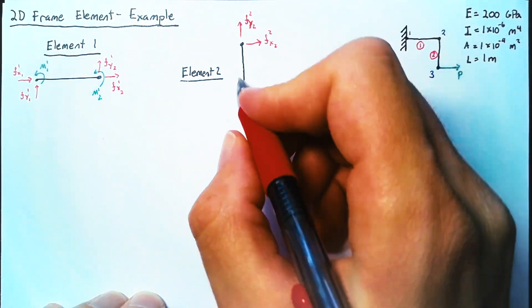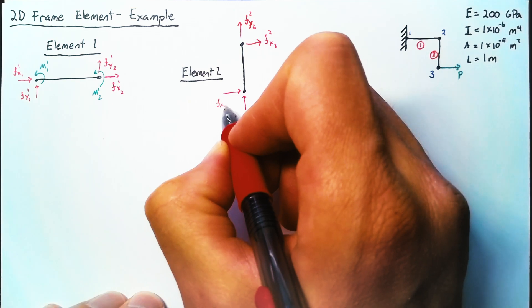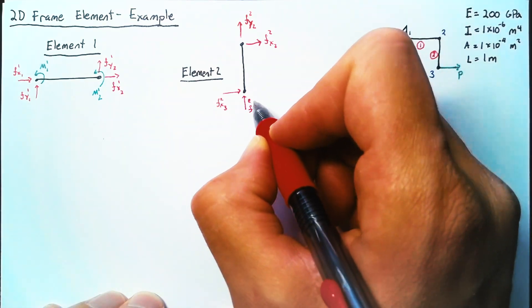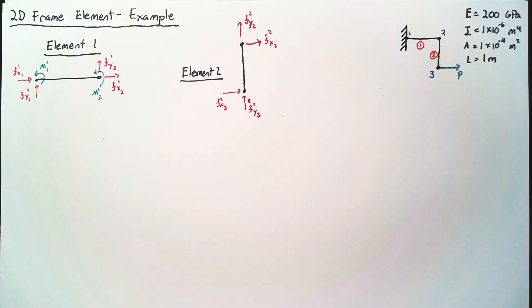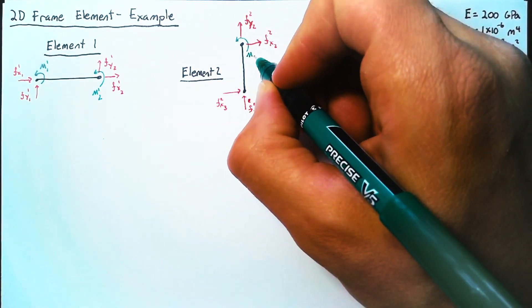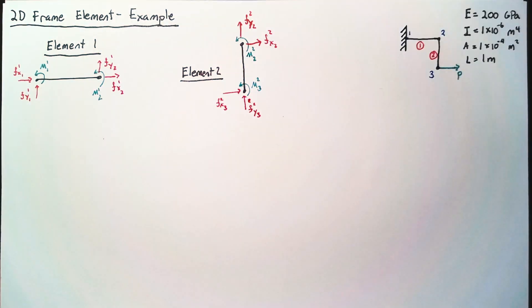Now for each node, there are two forces and a moment. Those three items refer to the three degrees of freedom that we have on each node. So for each of these elements, we expect to have a 6x6 matrix.